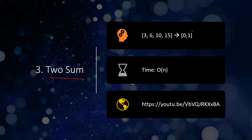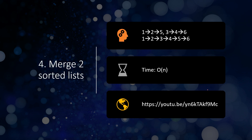The third problem is Two Sum. You are given an array and you have to find whether there exists a pair of two numbers that sum to a given value. For example, if you want to find 9, you see that 3 and 6 make 9, so you have to return their indices. Again, you should do it in O(n), and here is the link to the detailed explanation.